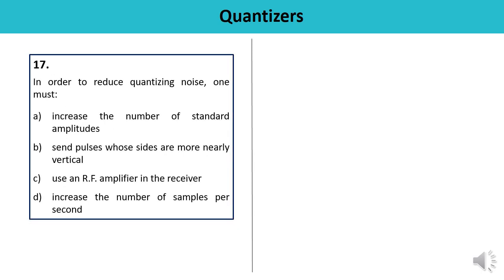Question 17: In order to reduce quantization noise, one must — increase the number of standard amplitudes, send pulses whose sides are more linearly vertical, use an RF amplifier in the receiver, or increase the number of samples per second? Quantization noise can be reduced by increasing the number of standard amplitudes. The answer is A.